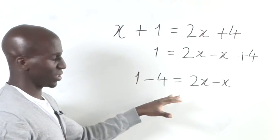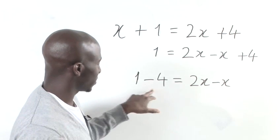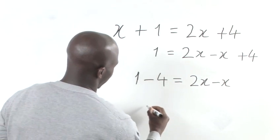Now all we need to do is simplify to solve for x. If you take a look at this, you've got 1 take away 4. That would be negative 3.